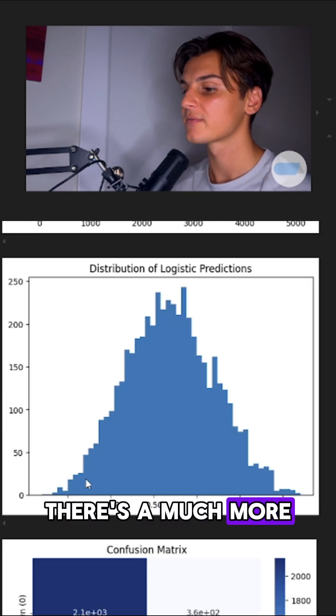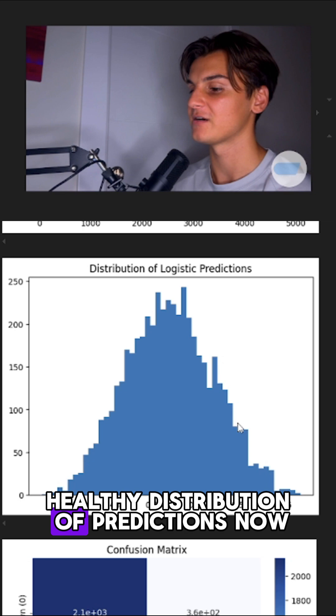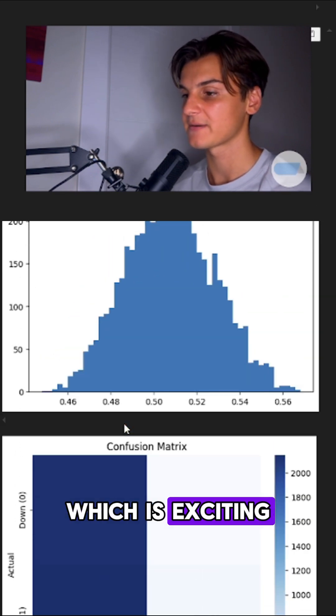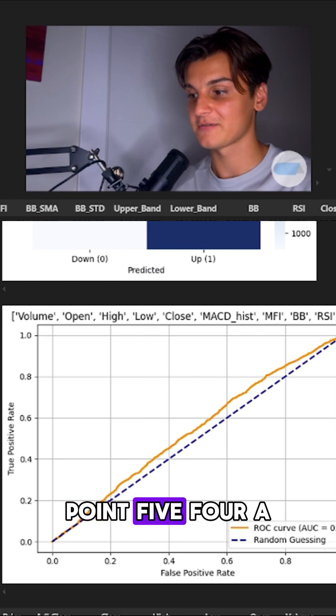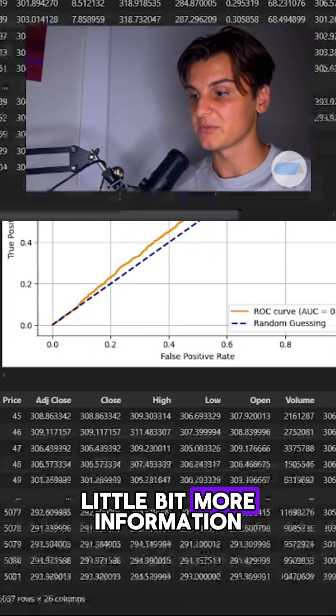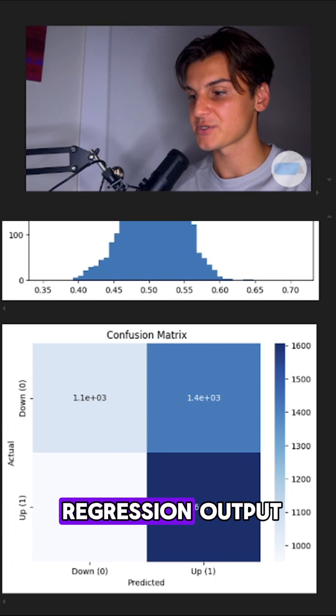There's a much more healthy distribution of predictions now, which is exciting. What if we just add more variables? Okay, 0.54, a little bit more information. Let's look at our regression output.